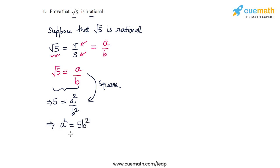Now in this relation, a square equal to 5 b square, the RHS, the right hand side, is a multiple of 5 because we have this factor of 5 here. And this means that a square is also a multiple of 5. And because a square is a multiple of 5, this means that a itself must be a multiple of 5 as well.